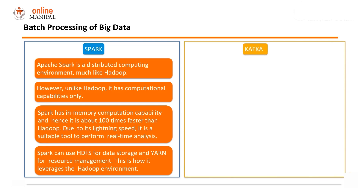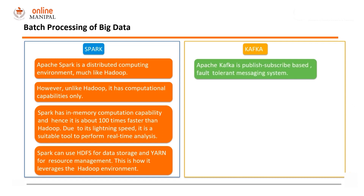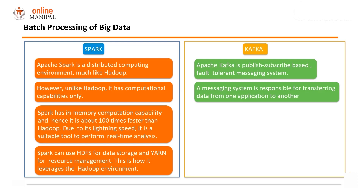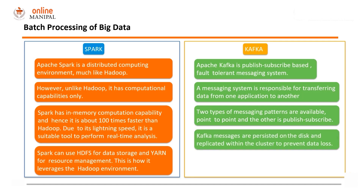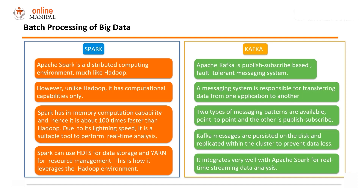Kafka is another tool used for analyzing big data in real-time. Kafka is not really an analysis tool but is basically a messaging system responsible for transferring data from one application to another. There are two types: point-to-point and publish-subscribe. Kafka is a publish-subscribe-based messaging system. The Kafka messages can be persisted on disk so that loss of messages — meaning data — is prevented. It integrates very well with Apache Spark to do streaming analysis of data. So for real-time processing, Kafka and Spark work hand-in-hand.